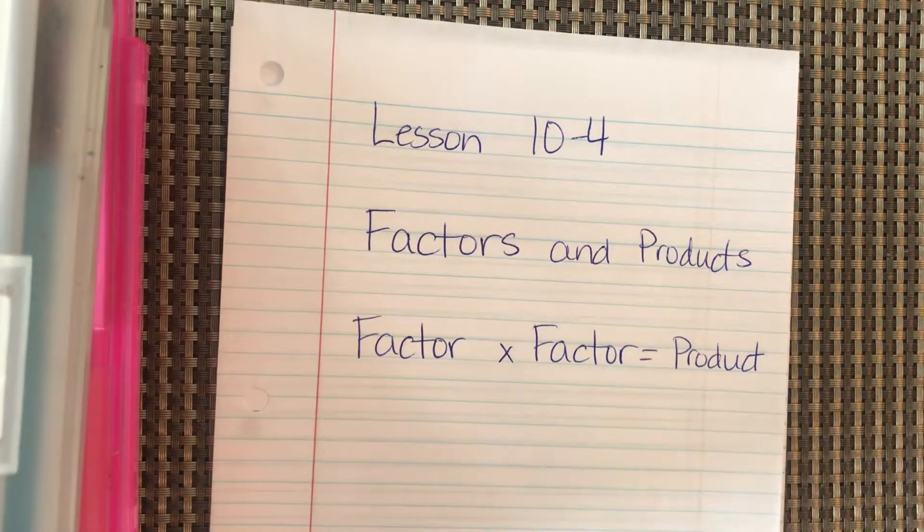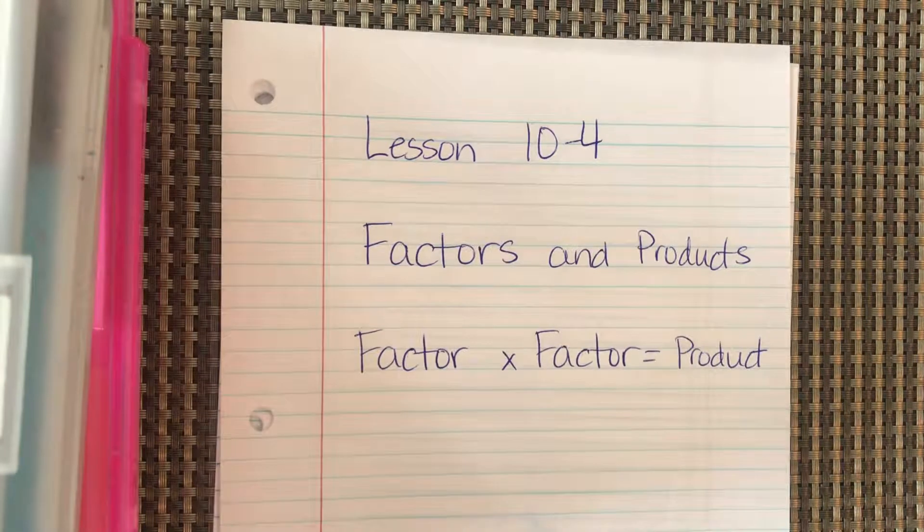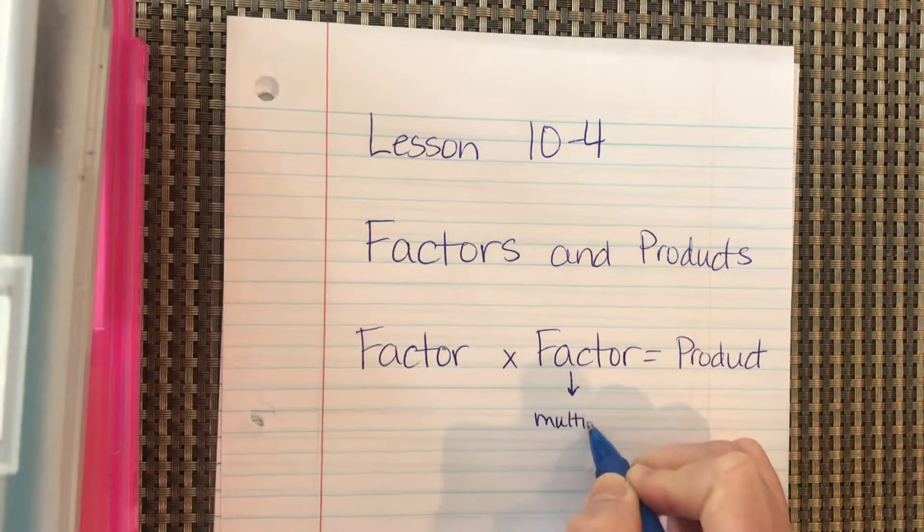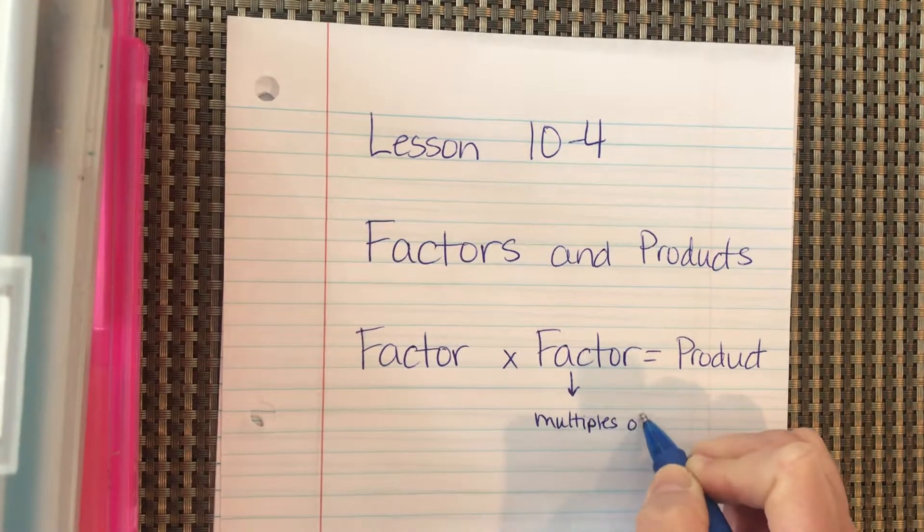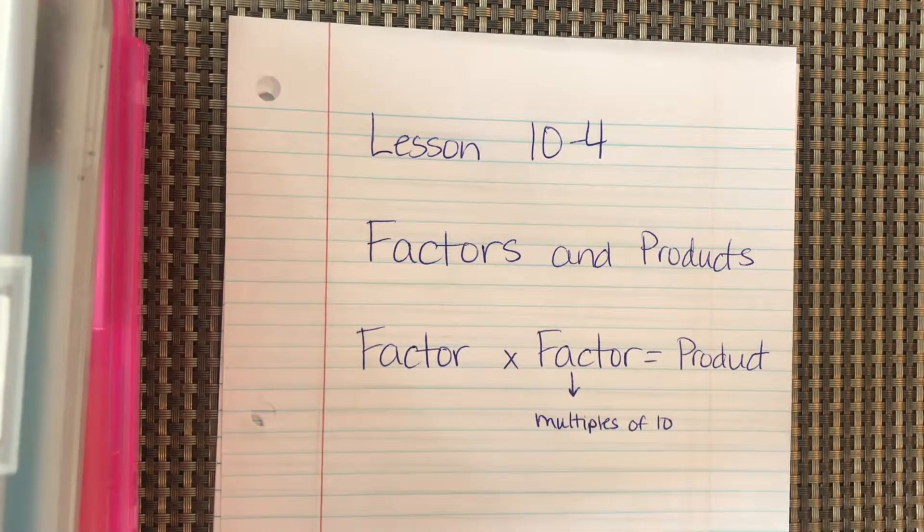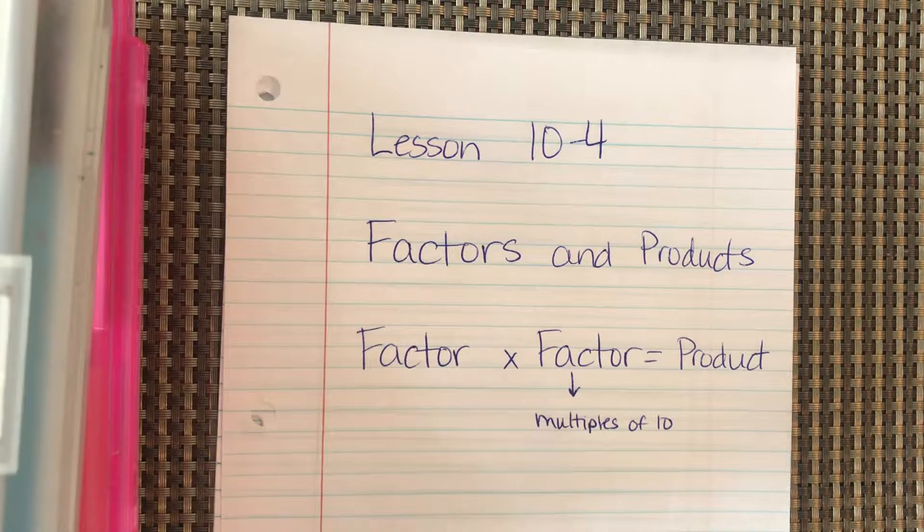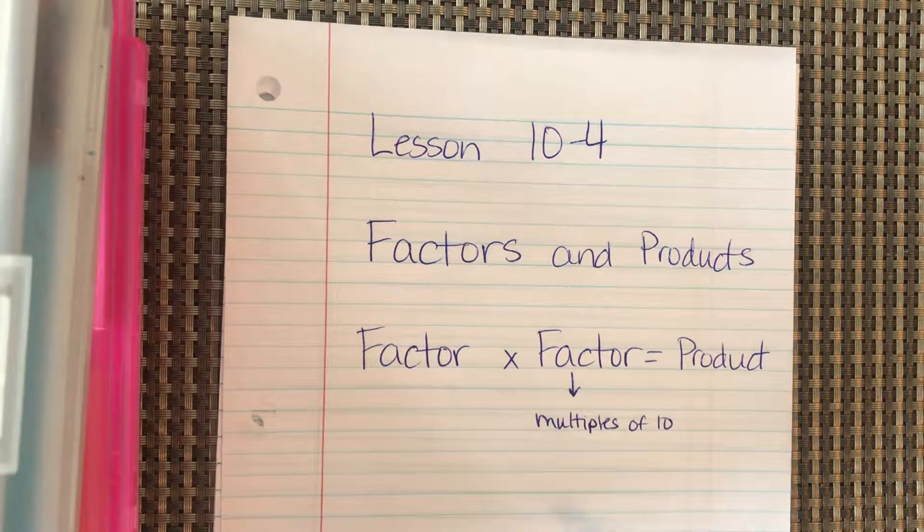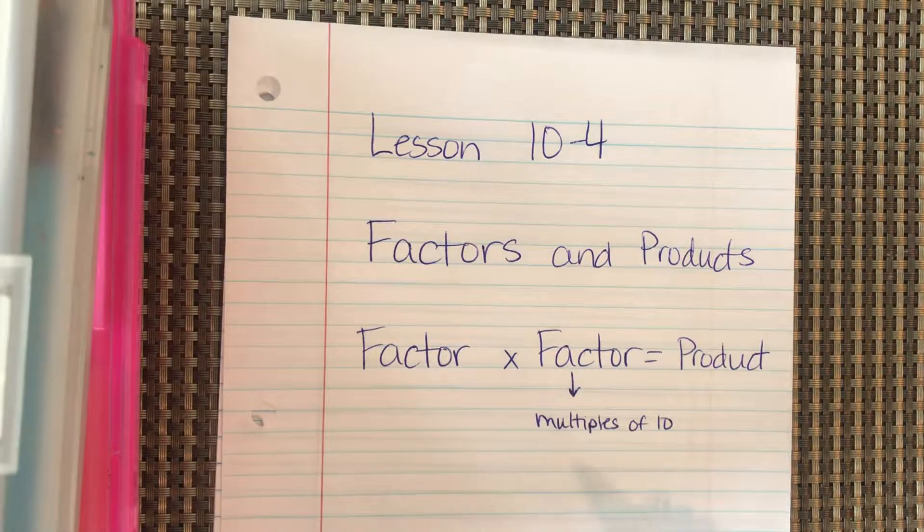Okay, today we're going to deal with one of these factors is going to be a multiple of 10. Just today, not all—I mean six times seven, neither one of them is a multiple of 10, but six times 70, one of them is a multiple of 10.